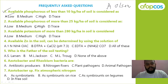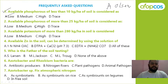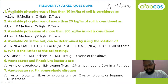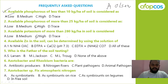Available potassium of more than 280 kg per hectare is considered as high, medium, or low? In such a case, the answer is high. Next: available zinc in the soil can be determined by — ammonium acetate, DTPA plus calcium chloride, EDTA plus diammonium — the correct answer is DTPA.